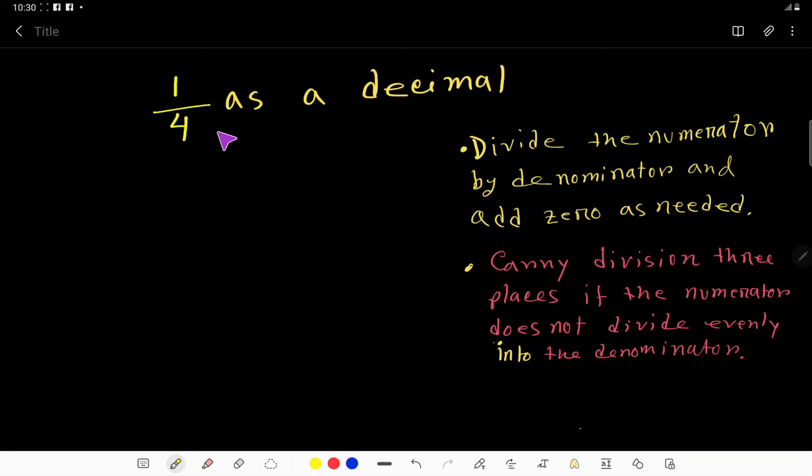1 by 4 as a decimal. To convert this fraction 1 by 4 as a decimal, we have to divide 1, the numerator, by the denominator 4.